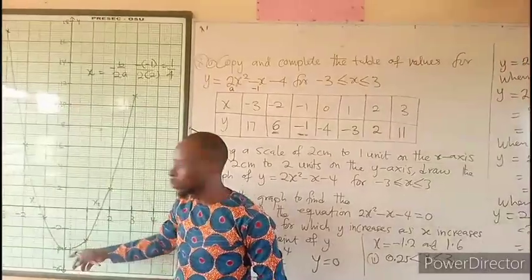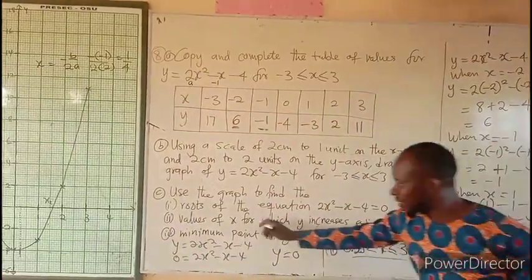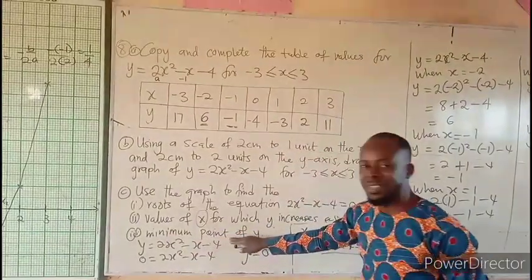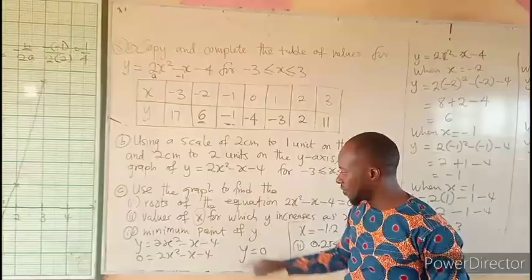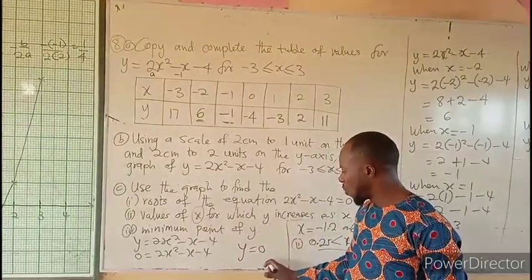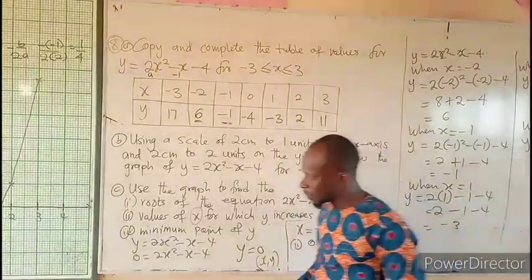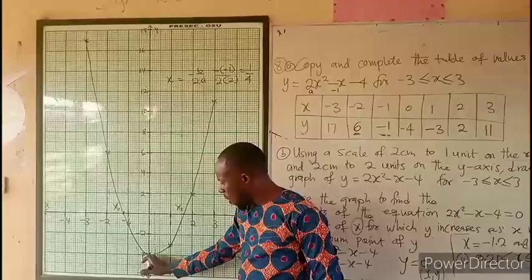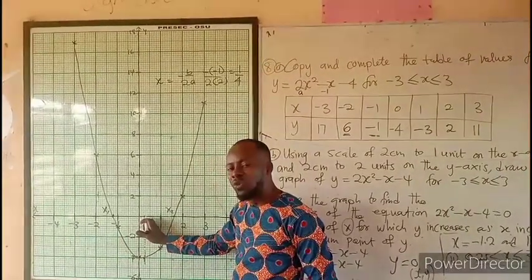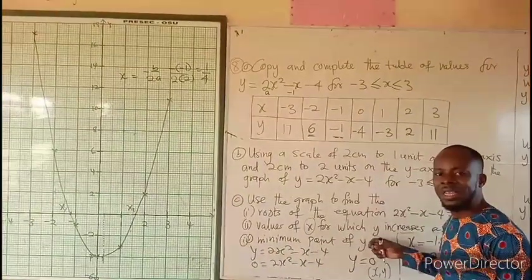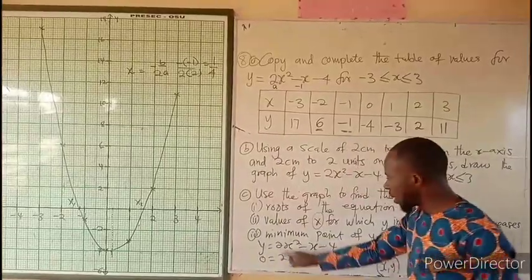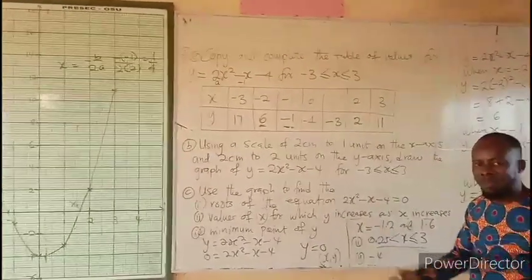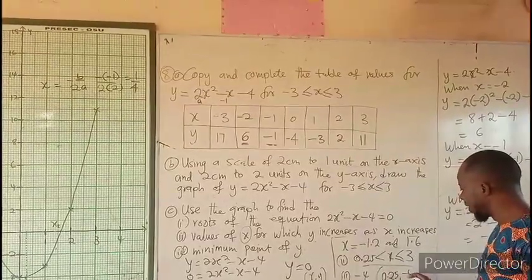Now to find the minimum point, the turning point is the minimum value of y. Every point has x and y coordinates. The turning point is here on the line of symmetry at x = 0.25. At this point, y = -4. So the minimum point is (0.25, -4), with the minimum value of y being -4.